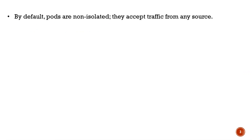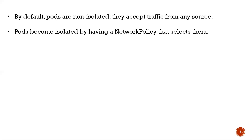Coming to network policies - by default, a pod is not isolated, meaning it can accept traffic from any source. If you create a pod and a cluster IP for it, that pod can be accessed by any pod inside the cluster. So if that is a web application pod, it can be accessed from anywhere. When you create a network policy associated with a pod, your pod becomes isolated - you can restrict from where it accepts traffic and to where it can send requests. All these things you define in the network policy and attach it to the pods, making your pod more secure.